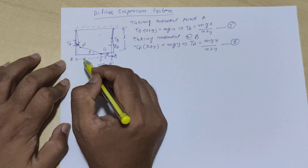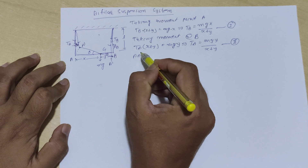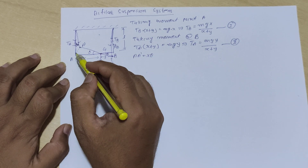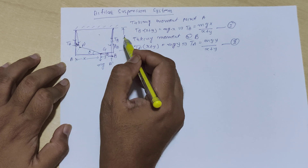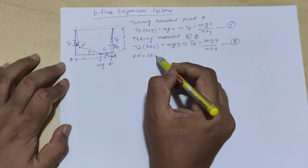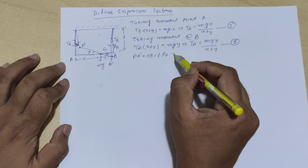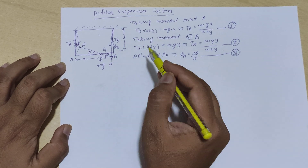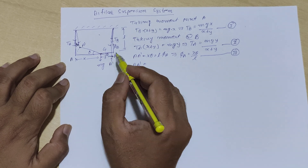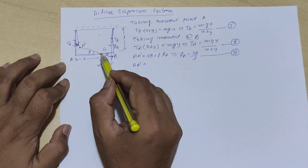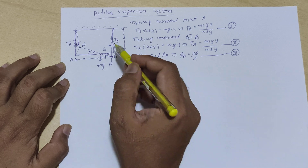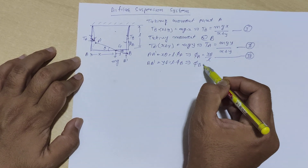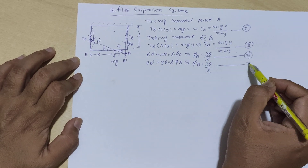Looking at this figure: if I want to measure A-dash displacement, it will be equal to x·theta. But this same angle also applies to the upper triangle, where the string length is L and the angle is phi_A, so that distance equals L·phi_A. Therefore phi_A equals x·theta divided by L — let us say this is equation number 3. Similarly, the B-to-B-dash distance equals y·theta, and from the upper triangle it equals L·phi_B. So phi_B equals y·theta divided by L — let us say this is equation number 4.